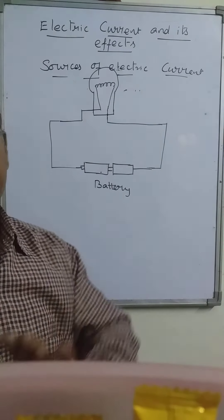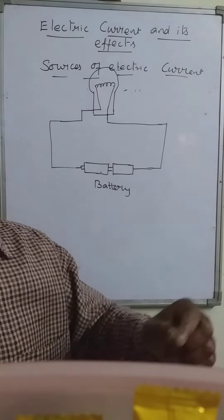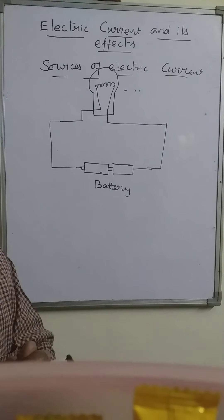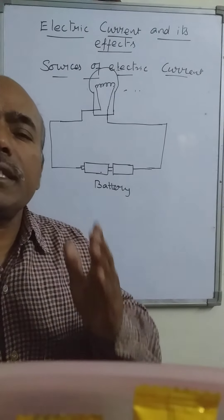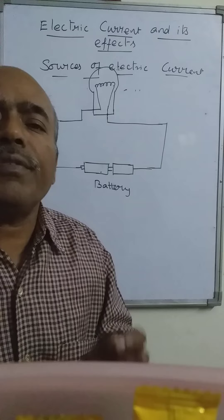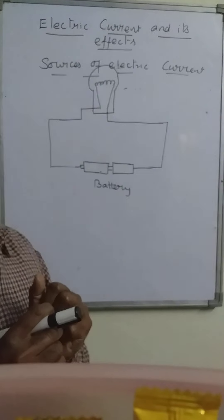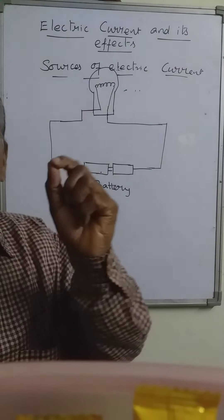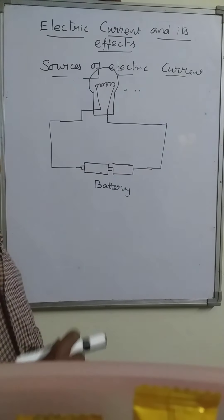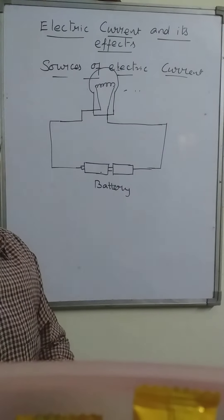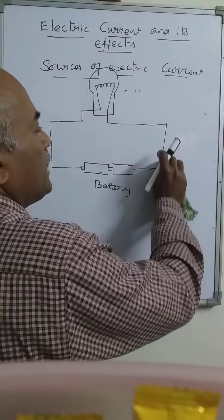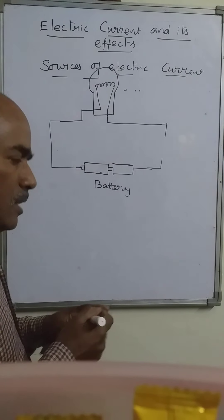The battery becomes weaker. To prevent this unnecessary and unwanted discharge or wastage of electrical energy, we can use one more component — one more device — that is the switch. A switch can be joined in this part of the circuit. The switch may be connected anywhere; suppose we are connecting the switch here.